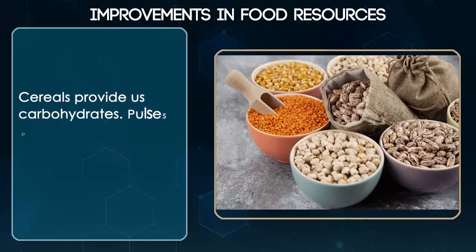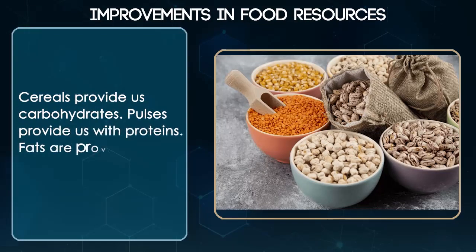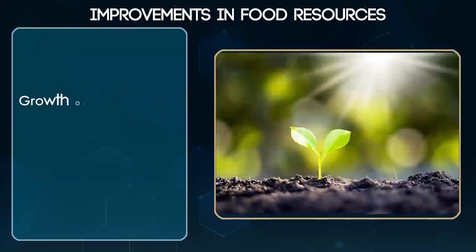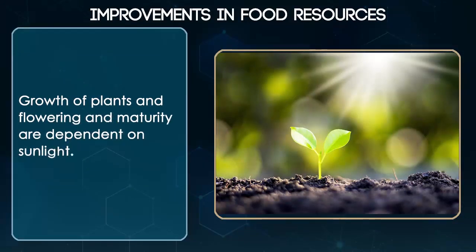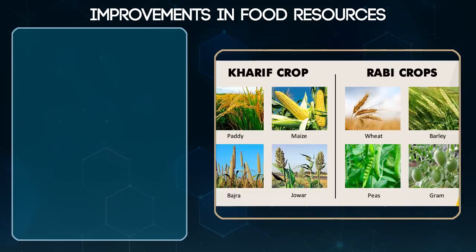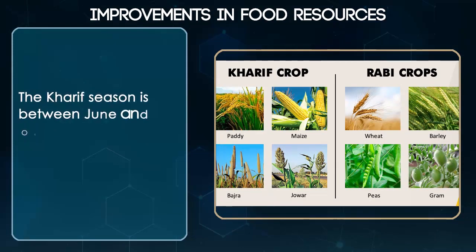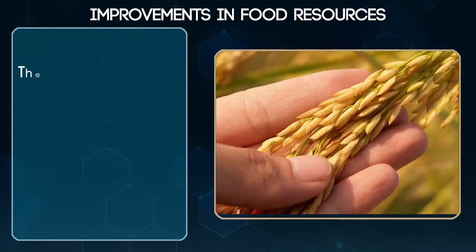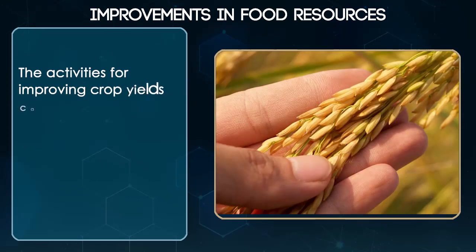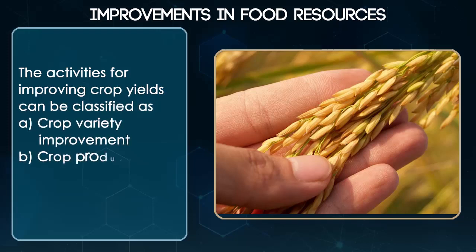Cereals provide us carbohydrates, pulses provide us with proteins, and fats are provided by oil seeds. Growth of plants and flowering and maturity are dependent on sunlight. The kharif season is between June and October and the rabi season is between November and April. The activities for improving crop yields can be classified as Crop Variety Improvement, Crop Production Improvement, and Crop Protection Management.